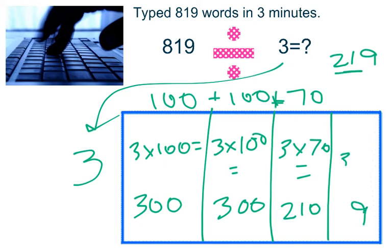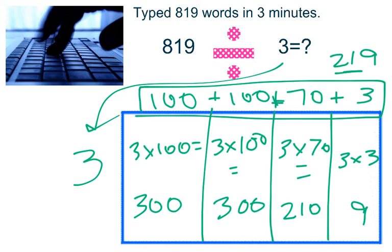And then finally, I'd be left with 9. 3 times what equals 9? Oh, yeah. 3 times 3. So then I'd put my 3 on the outside. So now look at this. This time, I don't just have expanded form. But I have 100 plus 100 plus 70 plus 3. 100 plus 100 is 200 plus 70 is 270 plus 3 would be 273. So my final answer would be 273 words per minute.